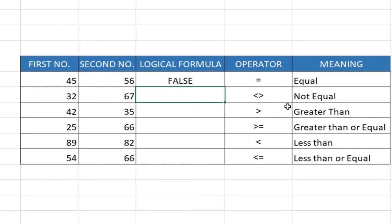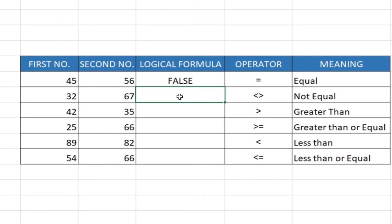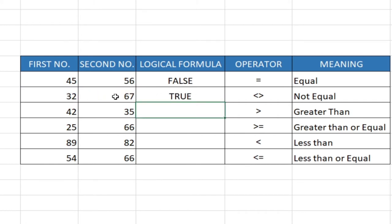Now let's try the second one — not equal to. Remember to subscribe to the channel if you are new. Let's look at this one. It's going to be equals sign, select our first cell, then we bring less than and greater than combined. When we use the two together, what we mean is not equal to. Select the second cell, hit Enter, and it's saying true — meaning these two are not equal.